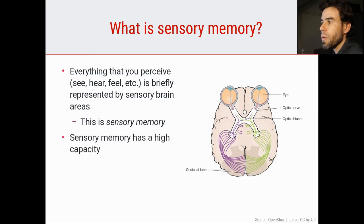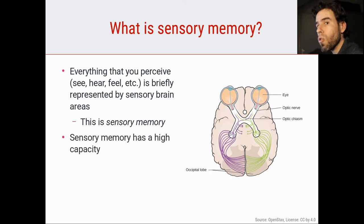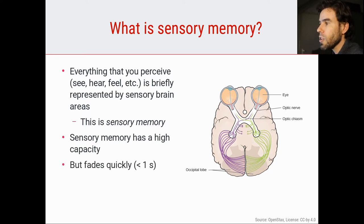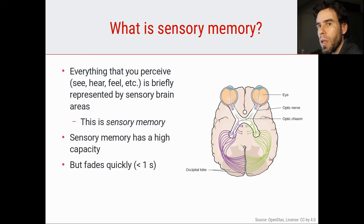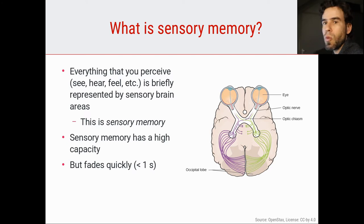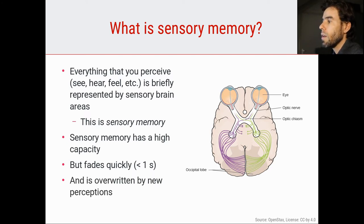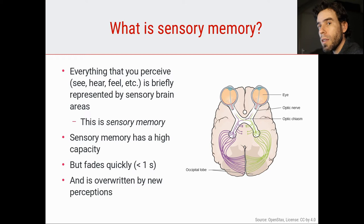Sensory memory has a very high capacity, meaning that essentially everything that you see causes a sensory memory. So in that sense you have a memory of everything, you could say. But it is hardly real memory in the way that most people think about memory, because it fades really quickly — within about one second — and as soon as you perceive something new, all that sensory memory is overwritten.